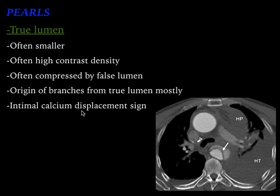Another important sign is the intimal calcium displacement sign. You can see here a small speck of calcification that is displaced — it should be located at the intima but has been displaced internally. This is called the intimal calcium displacement sign. These are the characteristic features to look for to identify the true lumen.